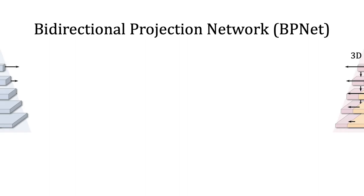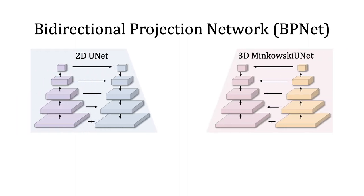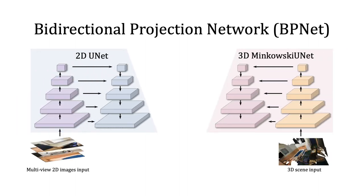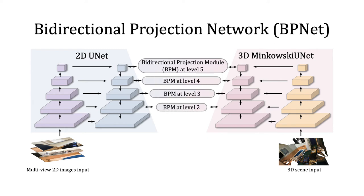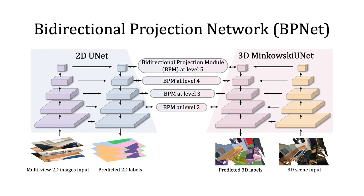Our BPNet contains two symmetric U-shaped networks to process 2D and 3D data simultaneously. At the decoder stage, we bidirectionally interact the features between 2D and 3D networks using our proposed bidirectional projection module. This interaction is performed at multiple pyramidal levels, harvesting both low and high-level features in these two domains. Finally, both 2D and 3D semantic labels are predicted.